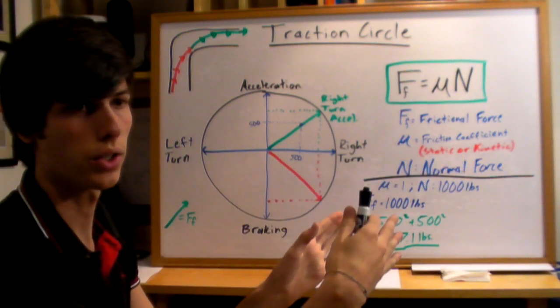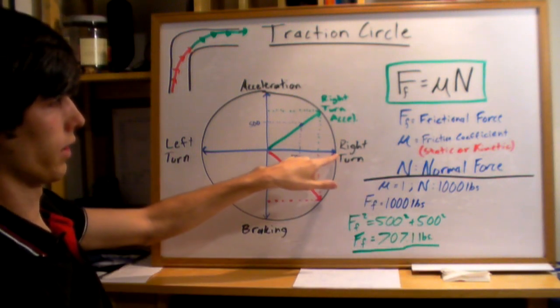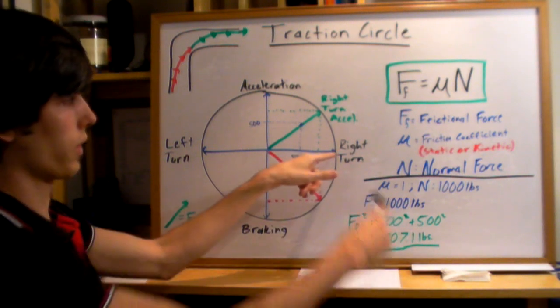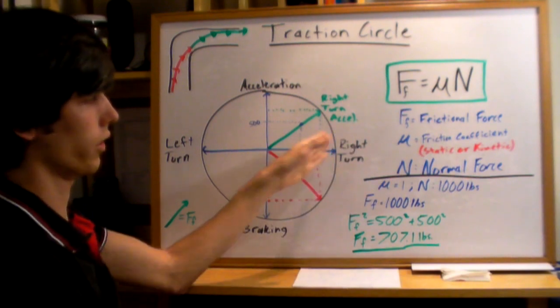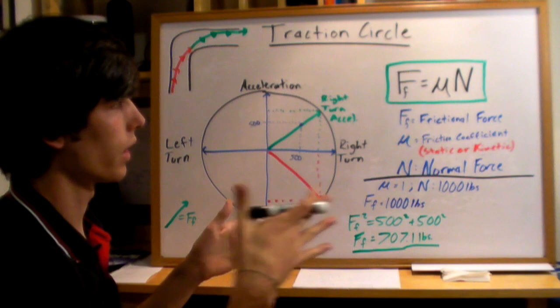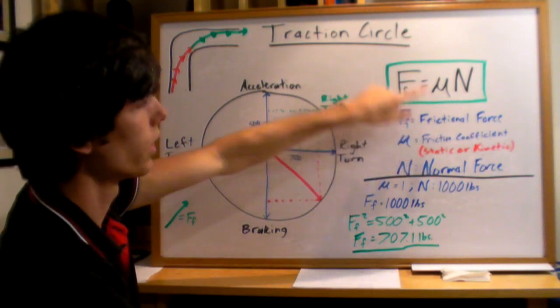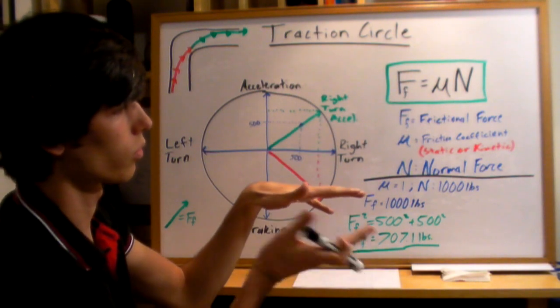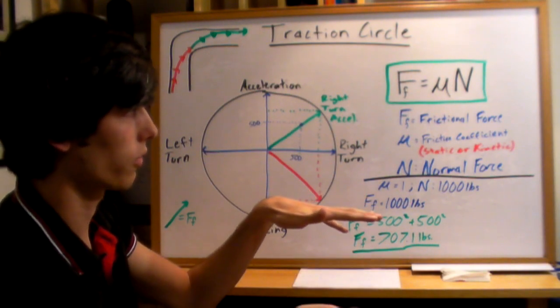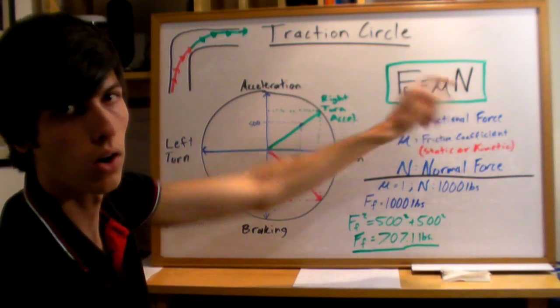Once you lose traction, you can't just go right back to the static frictional coefficient times the weight of your car and expect to regain traction. You're actually going to have to go way back in order to regain traction. The frictional force is equal to mu, the frictional coefficient. That's the coefficient of your rubber compound on your tires to the asphalt, and the normal force. That's going to be the weight of your car.